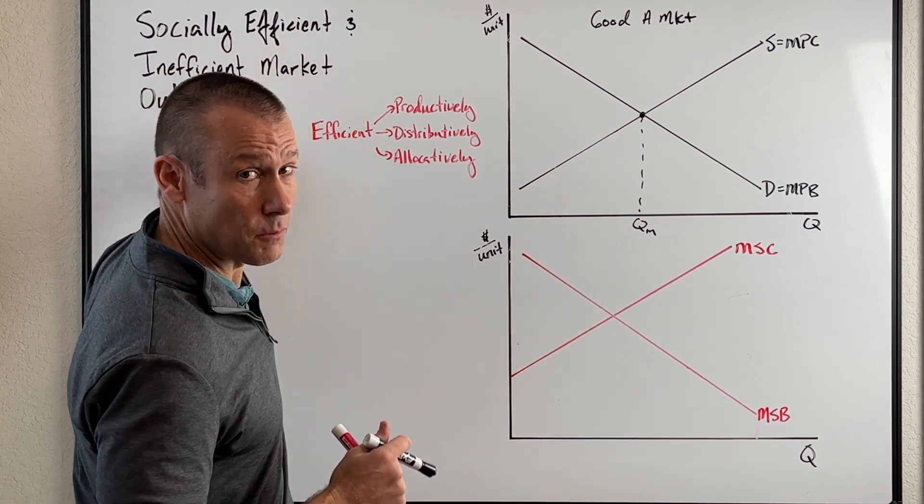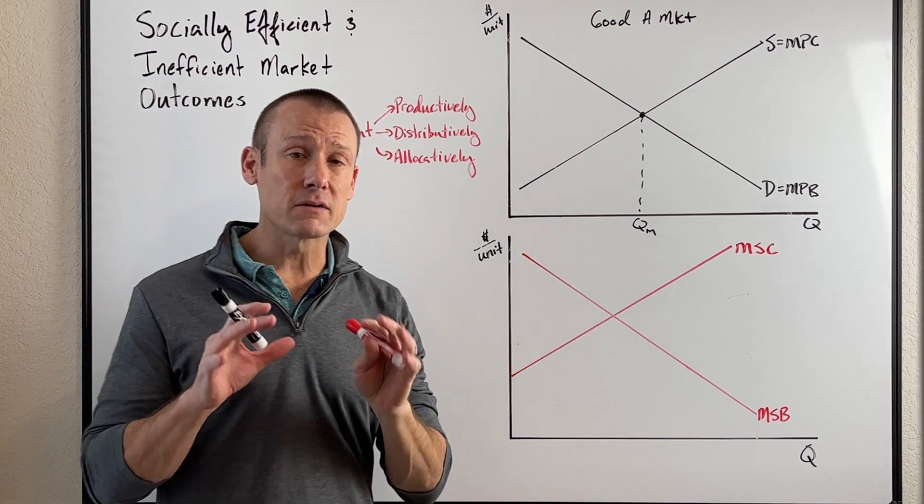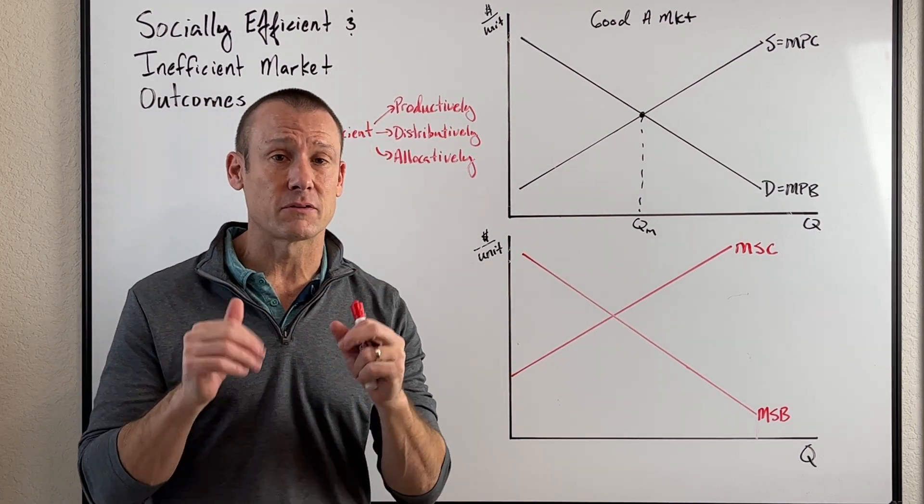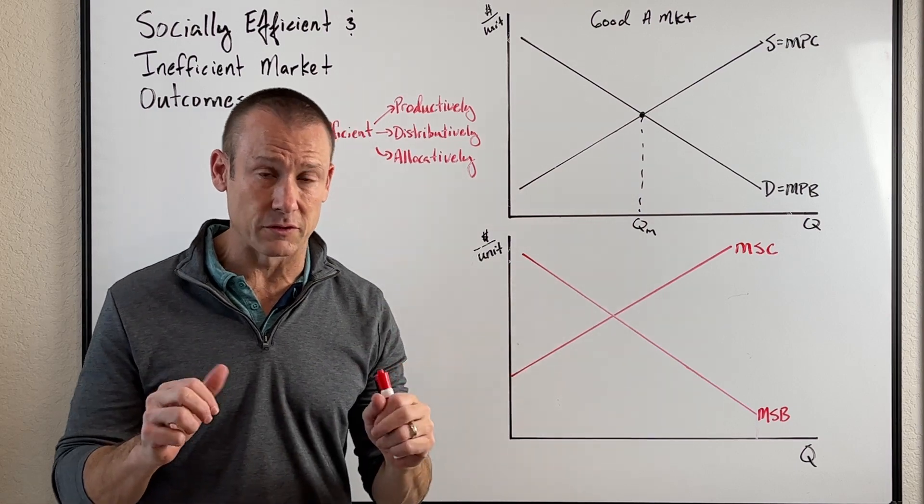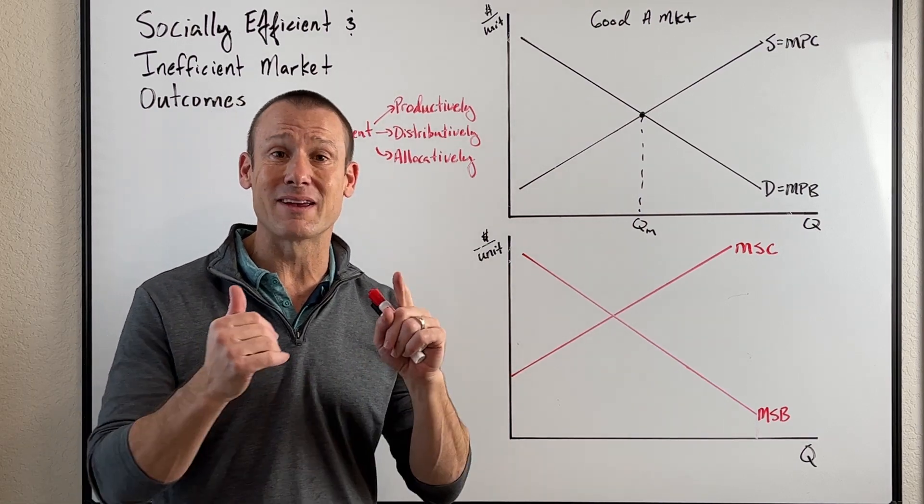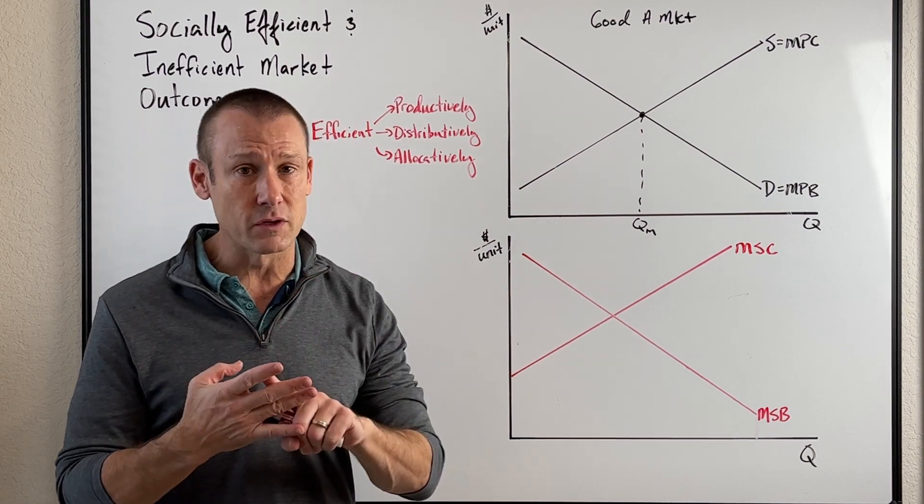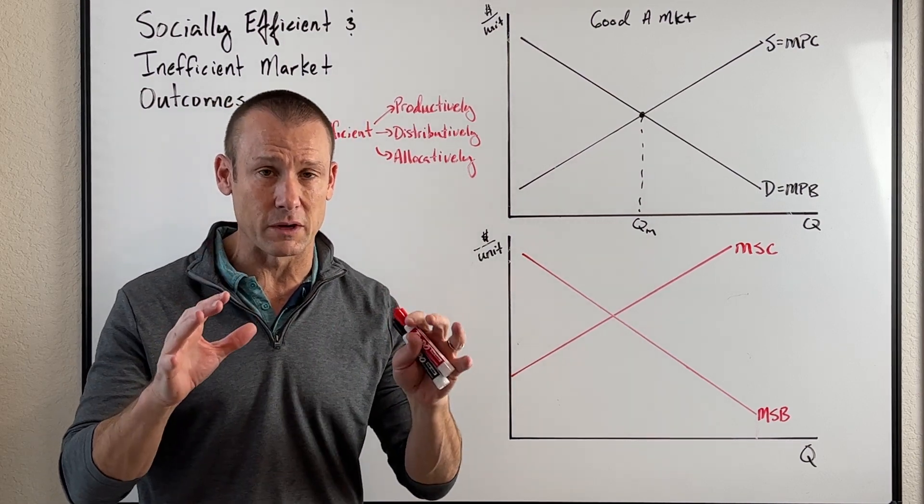We're talking about socially efficient and inefficient market outcomes. To understand this, we need to understand our economic system. Economic systems answer really important questions. They answer what we're going to produce, how we're going to produce it, who's going to produce it, and who's going to get it.